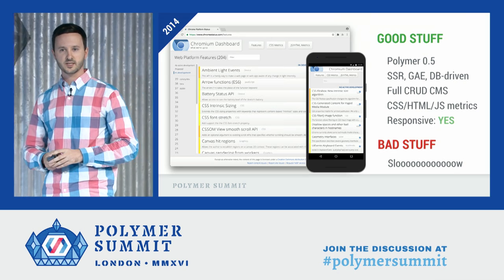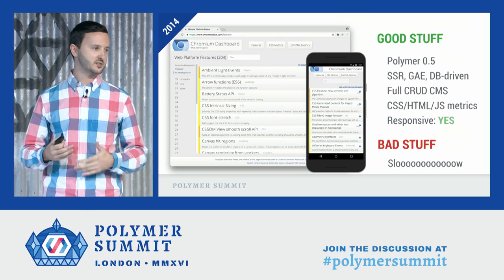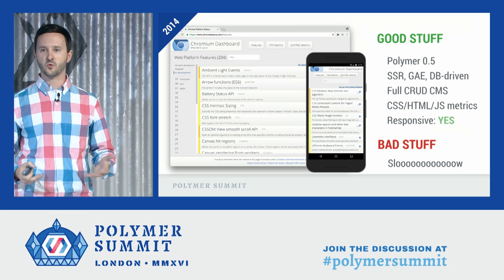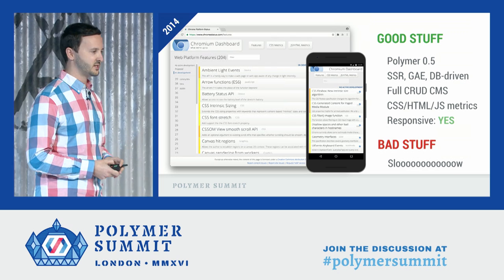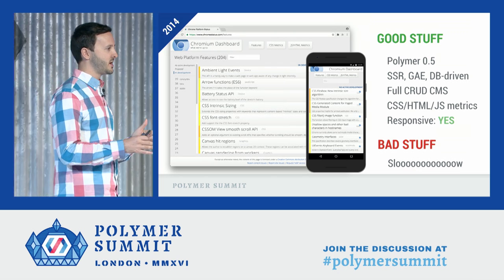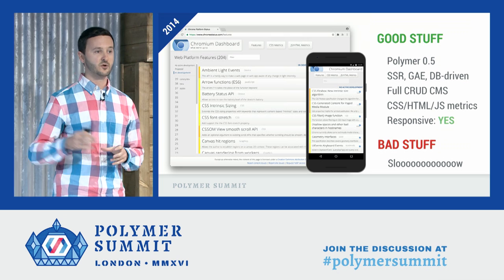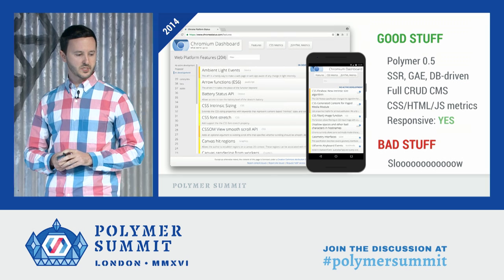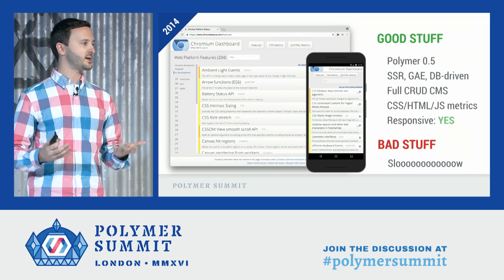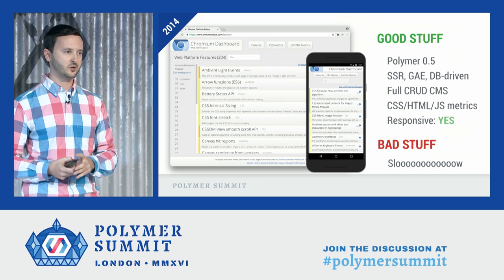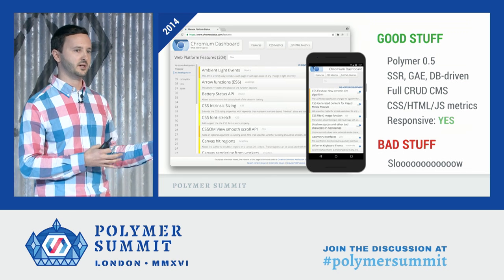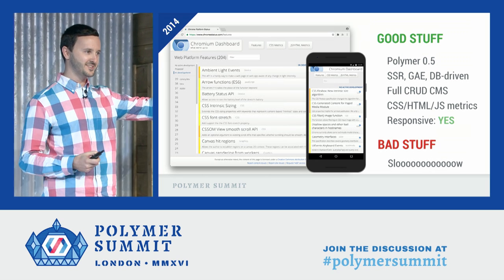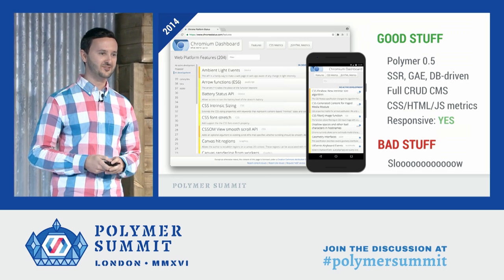In 2014, we launched Chrome Status again with a UI refresh. You have this nice list of infinite scroll features. It used Polymer 0.5. It was a proper web application with database integration on App Engine. Chrome engineers could go in, add a feature, edit a feature. We have folks from Opera and Microsoft contributing and keeping the data up to date. It uses a full CRUD system — a great example of a server-side rendered application combining old-school and new-school technology. It's responsive, so it works on mobile.